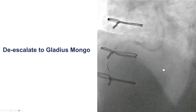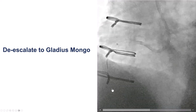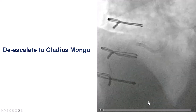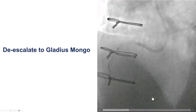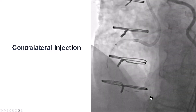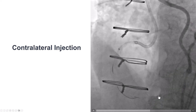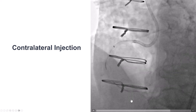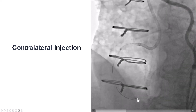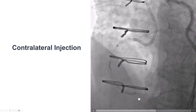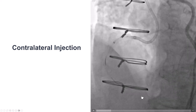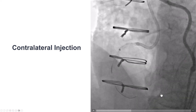We advanced the Turnpike LP, and then de-escalated to a Gladius Mongo. The plan was to use a knuckle and dissect all the way distally and do ADR, but surprisingly the Mongo seemed to go easily without being knuckled at the tip. We did a contralateral injection, and now we could see we were going in the course of the vessel and advancing the wire towards the end — a good technique for crossing CTOs once you have visualization from contralateral injection. The wire easily advanced along the course of the vessel.